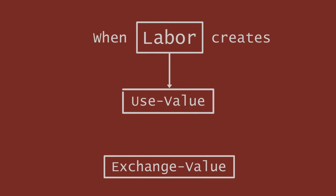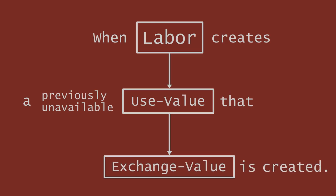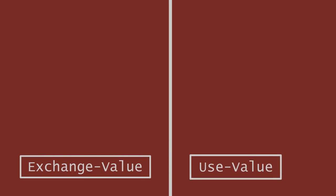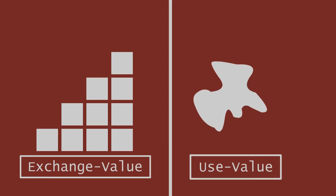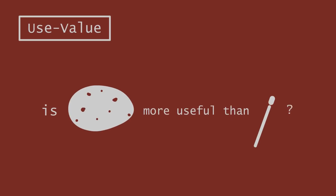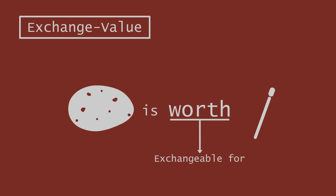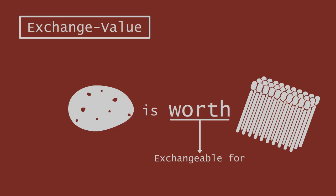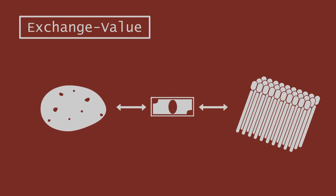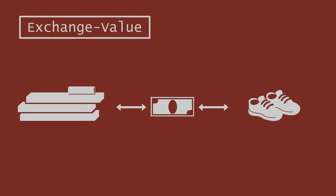Notice that labor does not always create Exchange Value either. I doubt you would find my crayon doodles very valuable, even though I put a lot of work into them. It is only when labor creates a previously unavailable Use Value that Exchange Value is also created. One characteristic of Exchange Value is that it is more easily quantifiable than Use Value. It is hard to say whether a potato is more useful than a match, but it is easier to imagine a potato being worth — that is, exchangeable for — a number of matches. This is where money comes in, to serve as a universal unit of account through which to compare all items with Exchange Value.